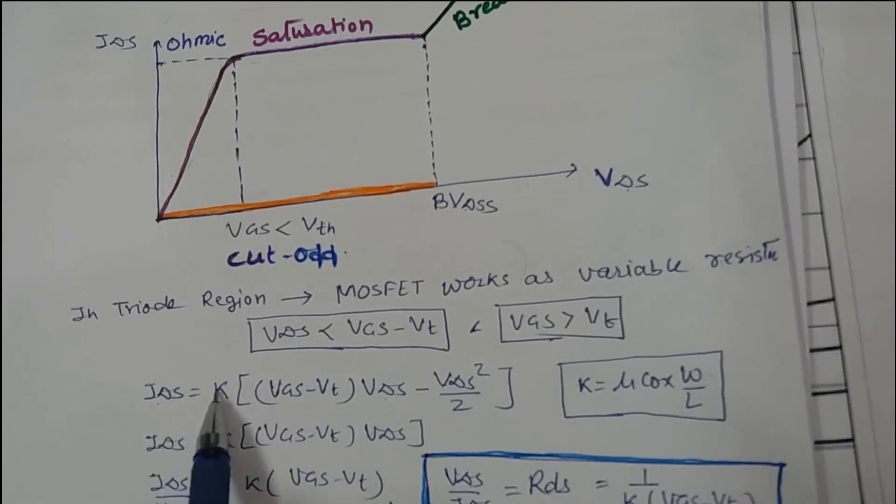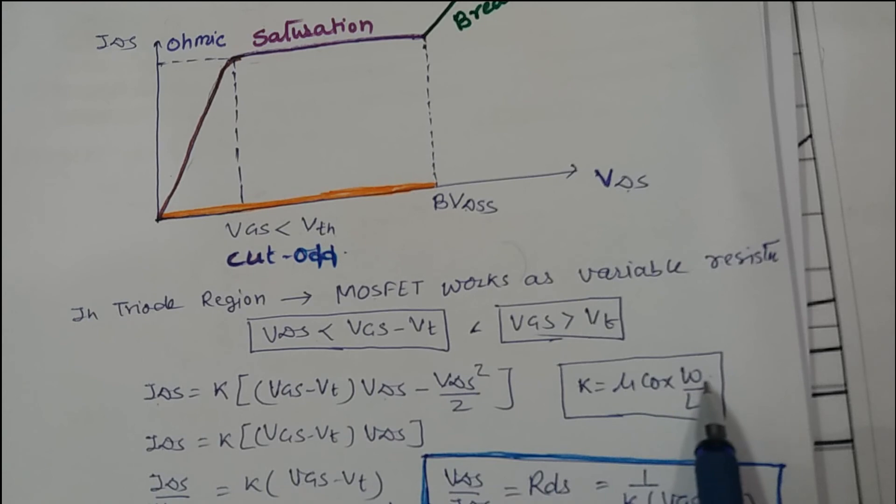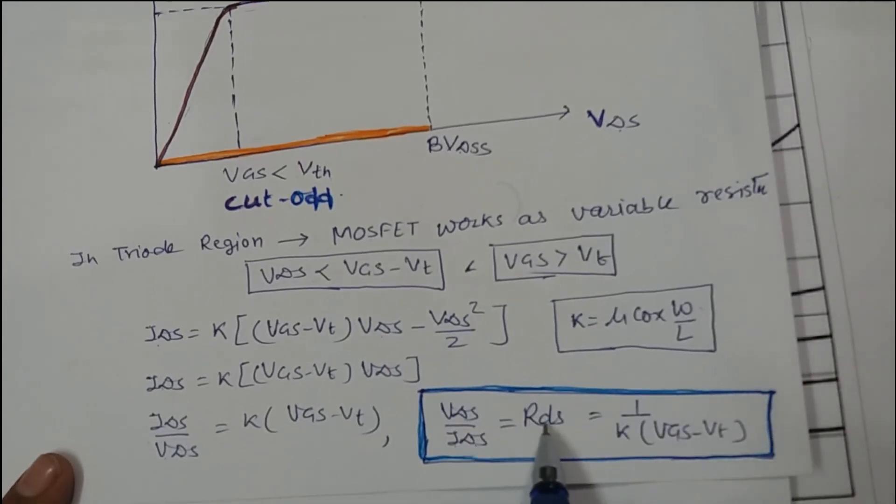So if you write the equation for ID, ID equals to K into (VGS minus VT) into VDS minus VDS squared divided by 2, where K equals to mu cox W by L. W equals to channel width, L equals to channel length. If you do some mathematical calculation, you can come over here: VDS divided by IDS equals to RDS, that is RDS on, and that value is 1 by K (VGS minus VT). From here you can see that if you increase VGS voltage, you can change the IDS value.